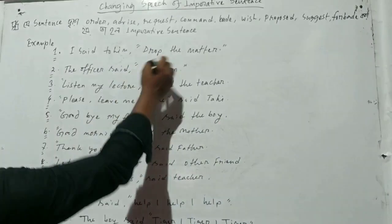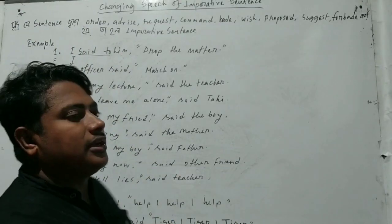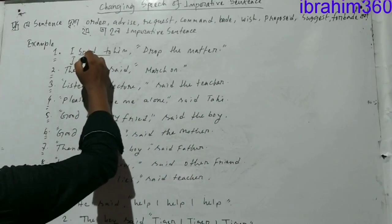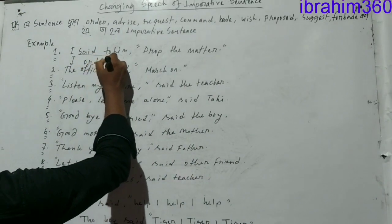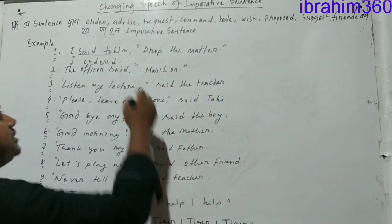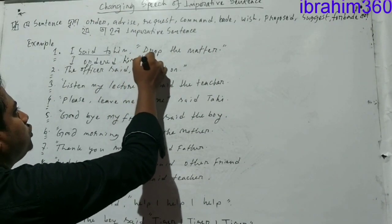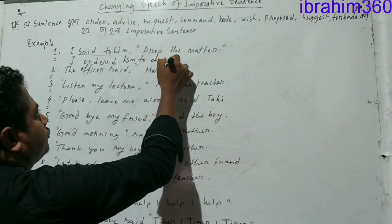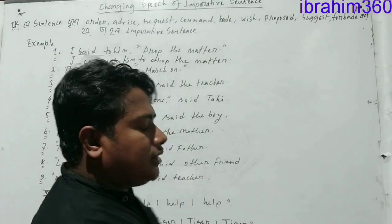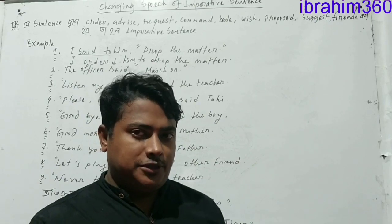So, here we see this is an order. We know how it gets changed. This speech means — order is understood. 'I ordered' — what we will do: for an imperative sentence, we will use the linking word. Therefore: I ordered him to drop the matter. The imperative sentence is very easy here — verb does not need to change; verb stays in base form.